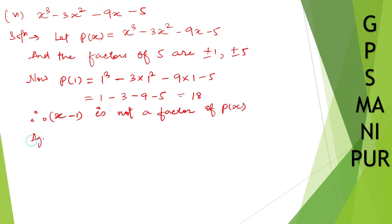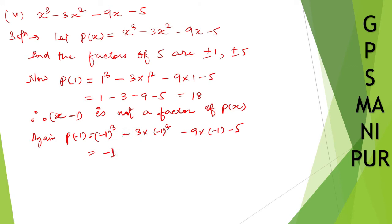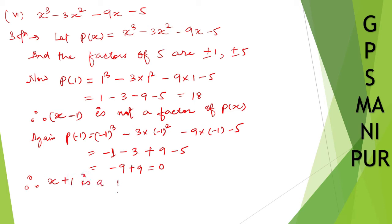Now let us take p(-1). So (-1) cubed minus 3 into (-1) squared minus 9 into (-1) minus 5. That gives minus 1, minus 3 into 1 is minus 3, minus into minus gives plus 9, minus 5. So minus 1 minus 3 plus 9 minus 5 equals 0. Therefore, x plus 1 is a factor of p(x).